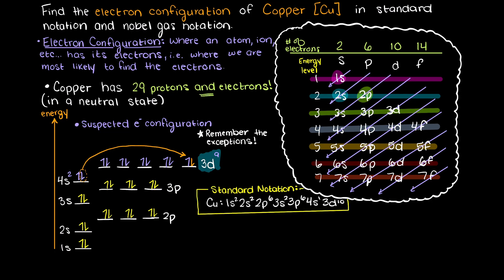The noble gas underneath copper is argon, which has 18 electrons and an electron configuration of 1s2, 2s2, 2p6, 3s2, 3p6. Therefore, we can substitute this portion of our standard electron configuration and rewrite it like so, converting it to our noble gas notation.